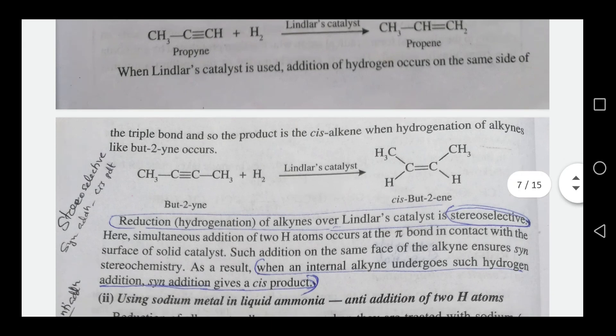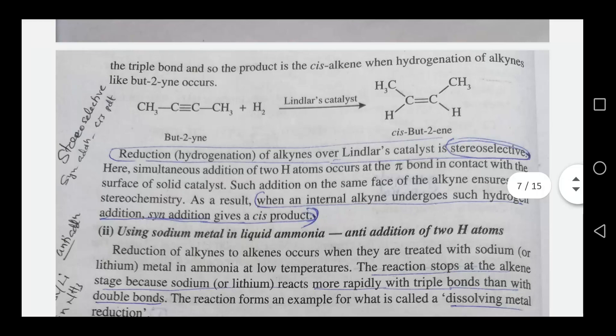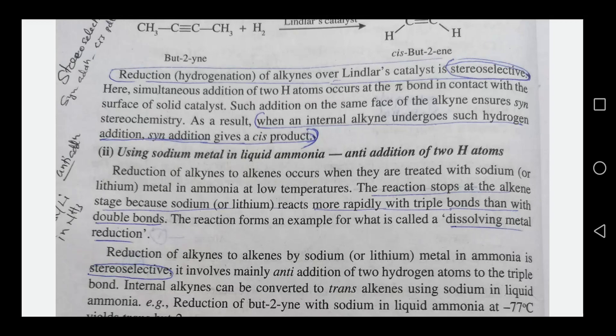The next reaction is Birch reduction, which uses sodium metal in liquid ammonia. This is an anti-addition reaction. Two hydrogen atoms are added in an anti fashion across the triple bond, giving a trans-alkene.